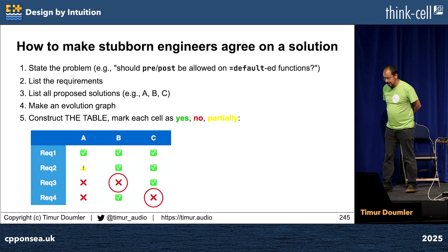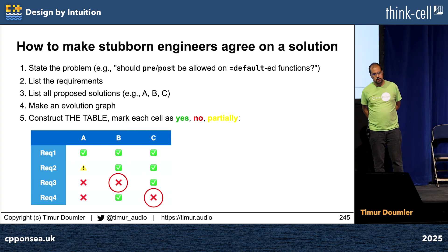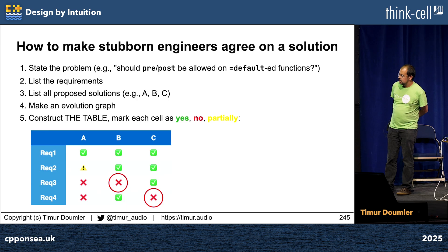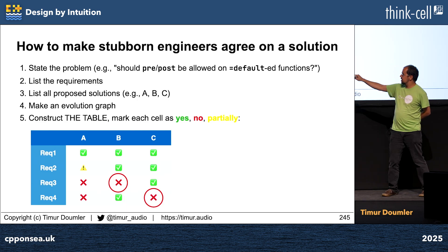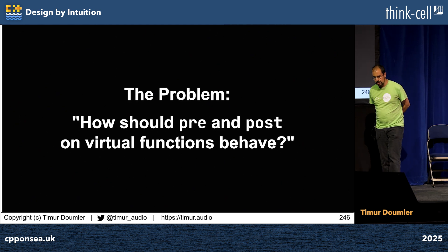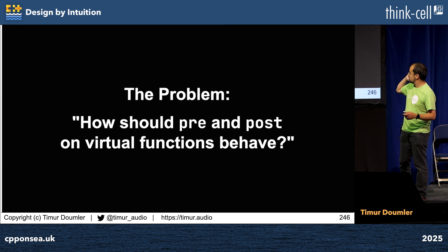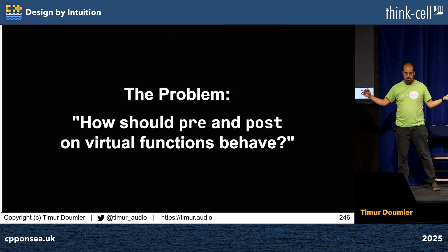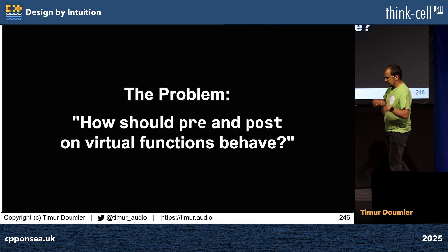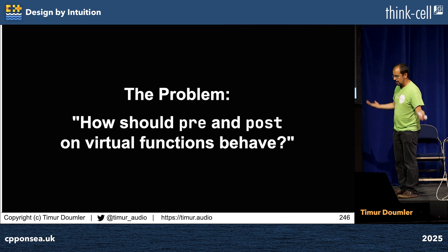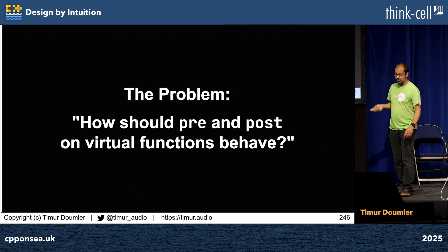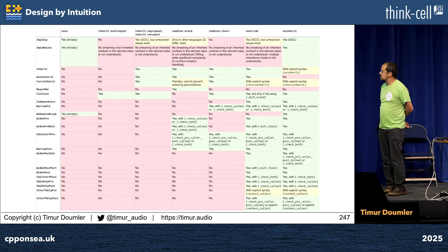I actually hit this problem now very concretely with one thing we really, really want to do with C++29, which is pre and post on virtual functions. This is good because the only thing you have to argue is this one thing. We don't have that in C++26 — we didn't agree on the right solution in time. So if you put pre and post on virtual functions in C++26, it's ill-formed. I did this thing with the help of a bunch of people: list all the requirements that anybody ever formulated, list every solution that anybody ever came up with, including going all the way back to 1986 with Bertrand Meyer and Eiffel, which actually does have contract assertions on virtual functions. So this is how the decision matrix looks like.